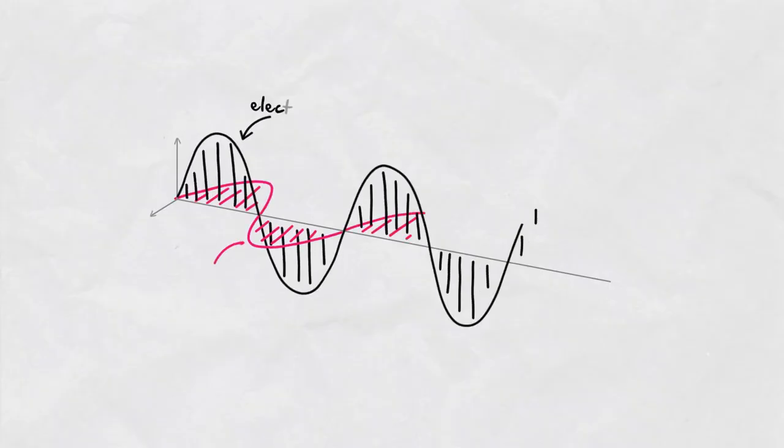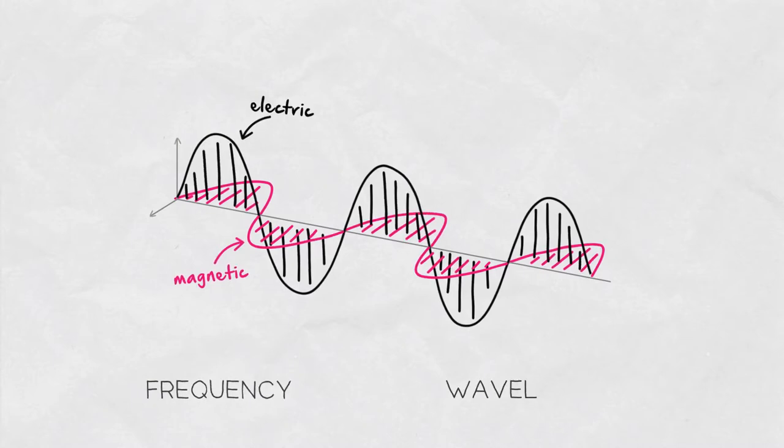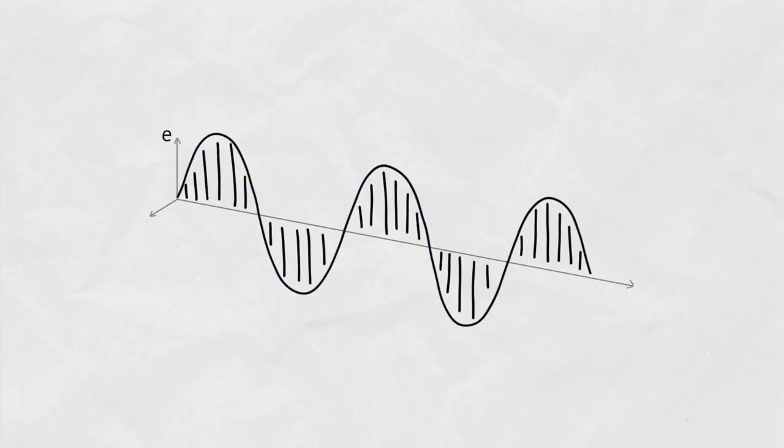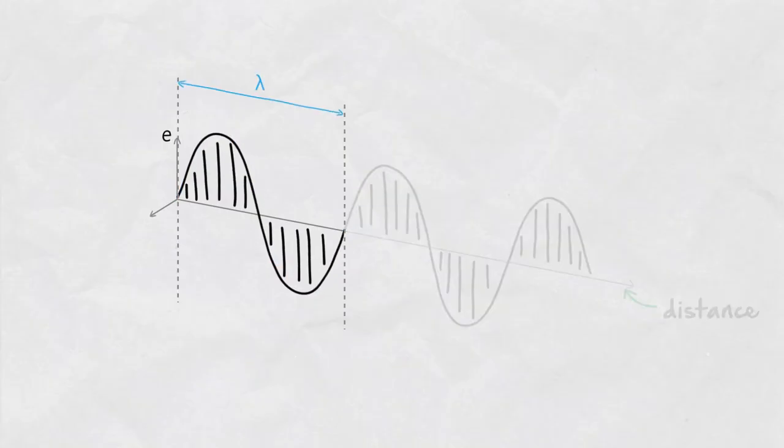Electromagnetic waves have an electrical and a magnetic component. Two basic properties of a wave are frequency and wavelength. Frequency says how many times a wave repeats its shape per second. Wavelength is the distance over which the wave repeats its shape.